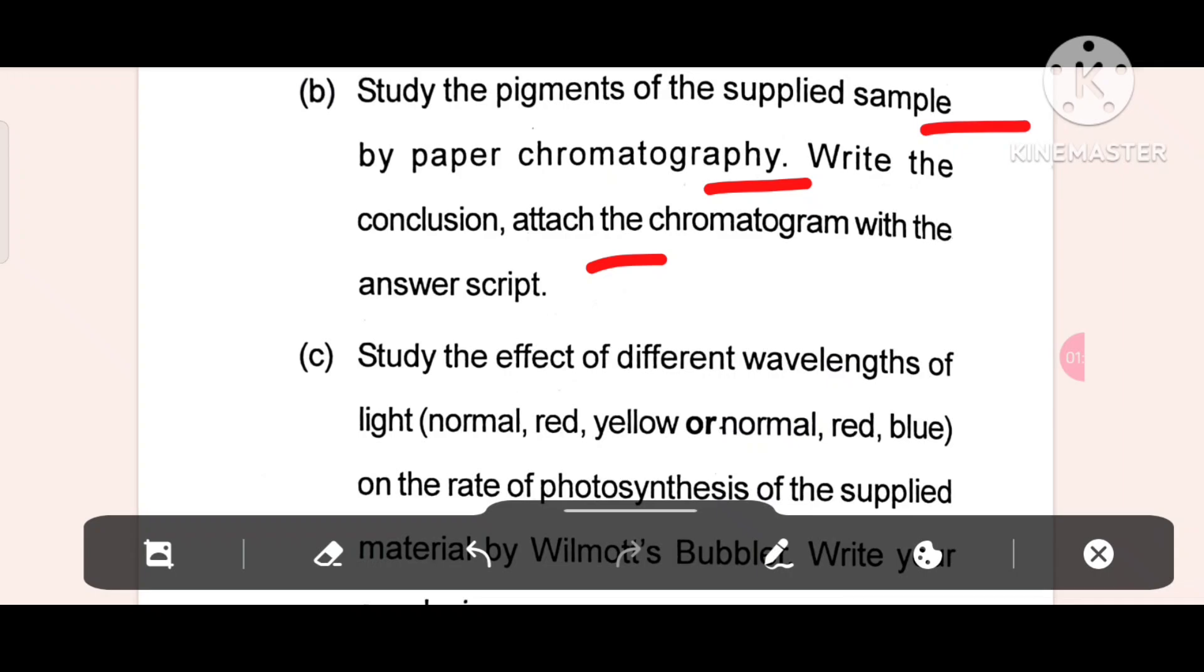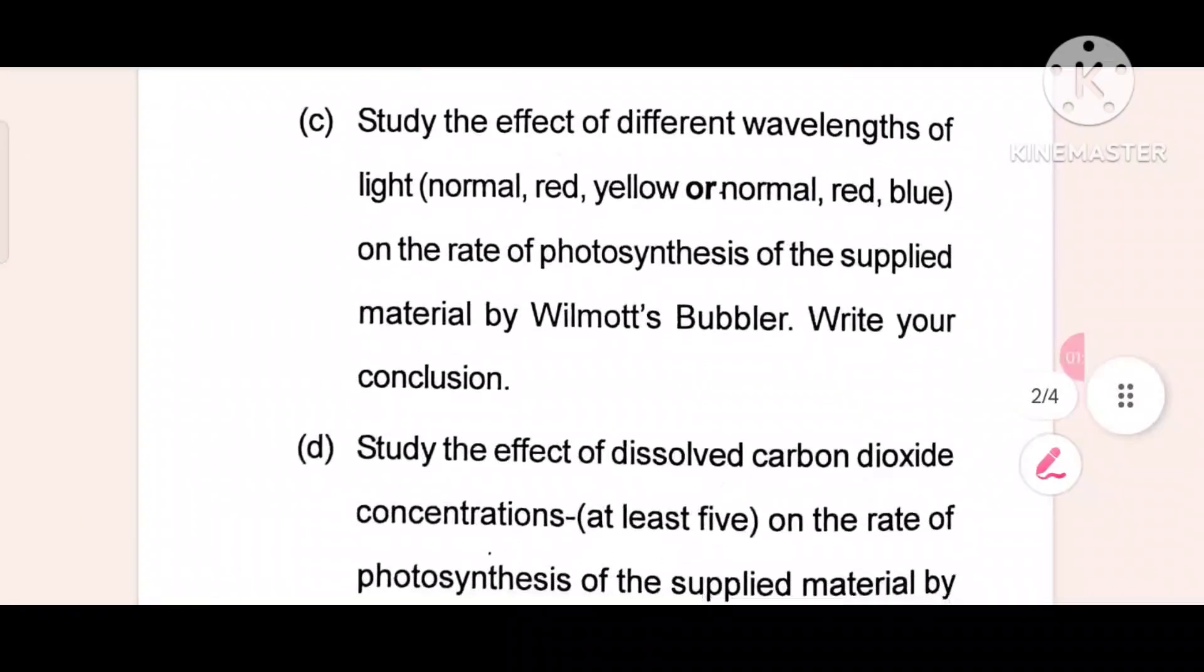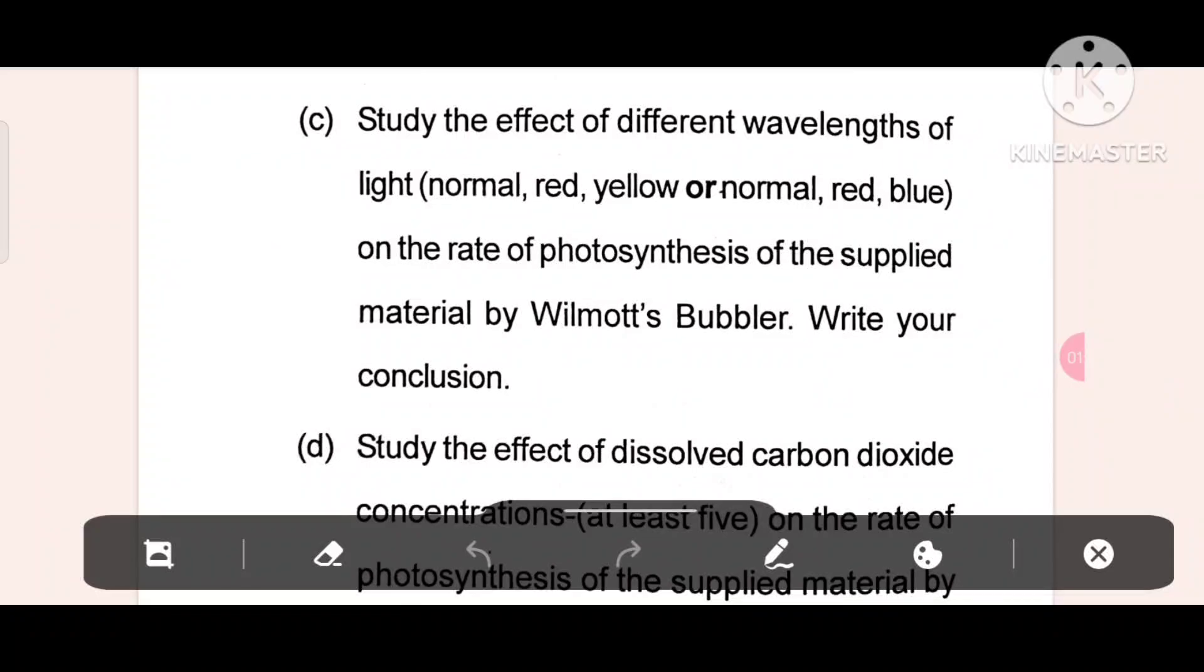Study the effects of different wavelengths of light - normal red, yellow or normal red blue - on the rate of photosynthesis of the supplied material by Wilmott's bubbler. Write your conclusion.